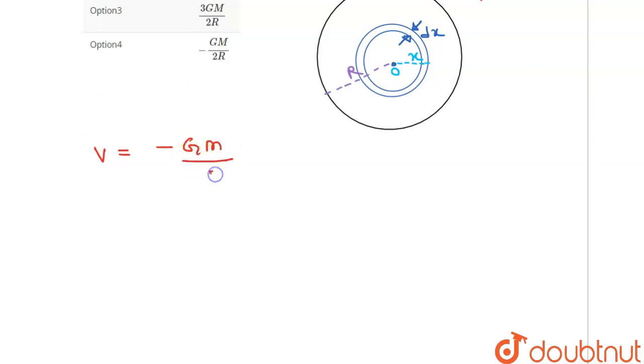And mass can be written as density into volume, that will be 4 over 3 pi r cubed. Also, dm for this can be written as rho into 4 pi x squared dx.